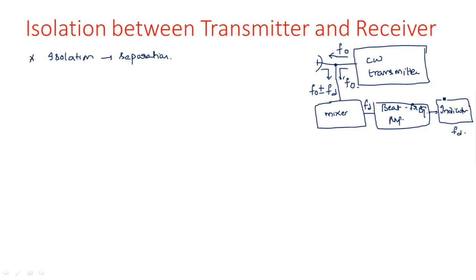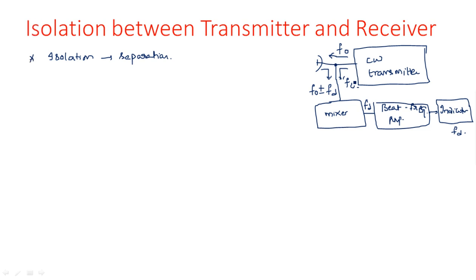Since f0 and f0 cancel out, only fd remains, which is amplified and received at the output. That is fine for basic operation. However, to detect targets at long distance, we must transmit very high power signals using high power amplifiers. If such a high power signal enters the receiver, it simply damages the receiver.